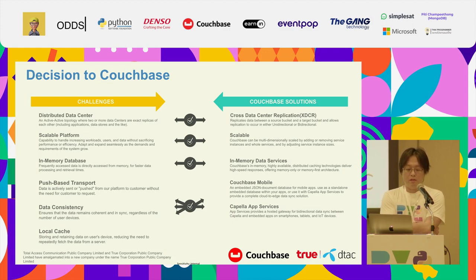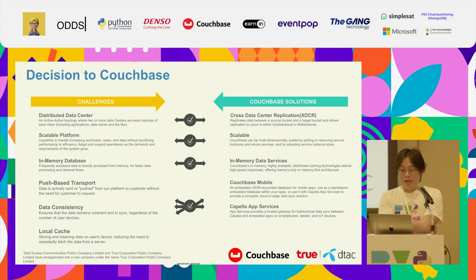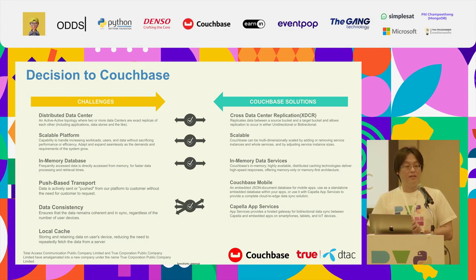Now I want to talk about why we chose Couchbase based on these challenges. For distributed data centers, Couchbase provides a Cross Data Center Replication (XDCR) feature that replicates data between Couchbase clusters, supporting both one-way and two-way replication. For the scalable platform, Couchbase is scalable — not as instant as Kubernetes, but still scalable within less than one hour based on our testing with 50 gigabytes of data.